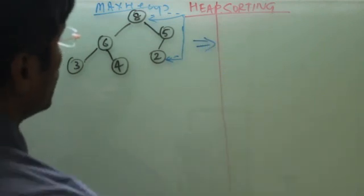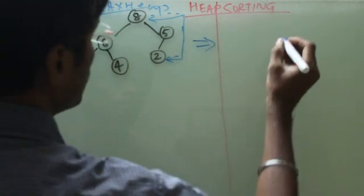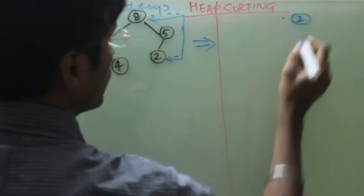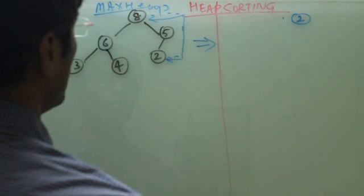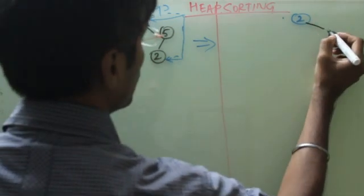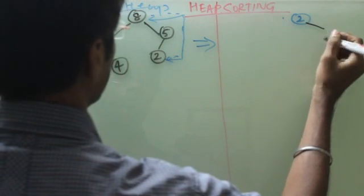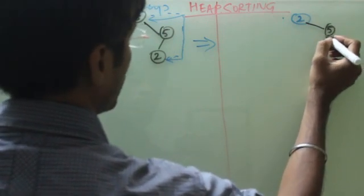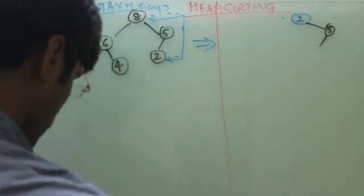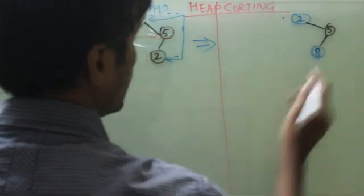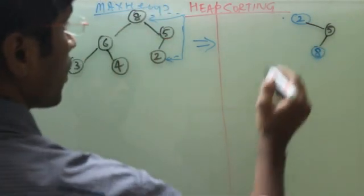So how does my tree look? So 2 will go up and 8 will come down. The tree becomes 2, 6, 3, 4, 5, and 8.